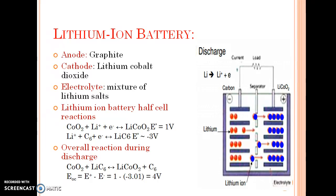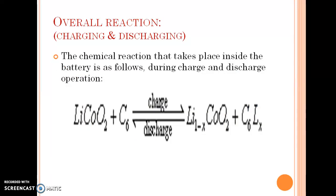The main features are: the lithium-ion battery commonly uses a graphite anode and lithium cobalt dioxide as the cathode. The electrolyte is a mixture of lithium salt. The lithium-ion battery gives a discharge voltage of 4 volts. The charging and discharging reactions are reversed during their respective operations.